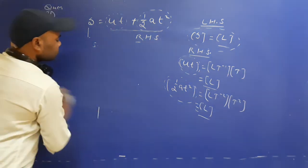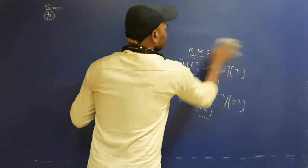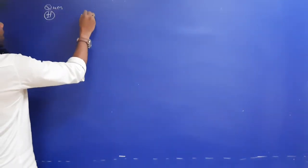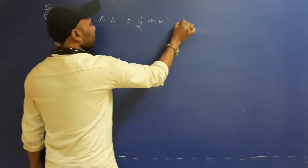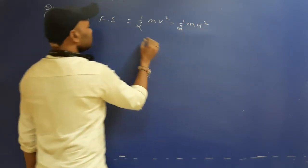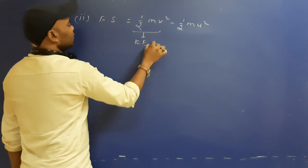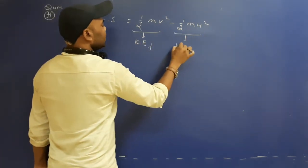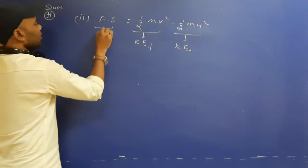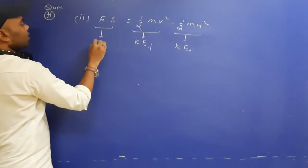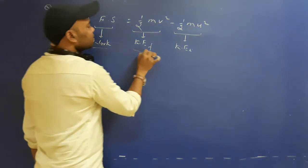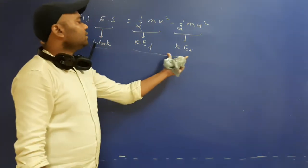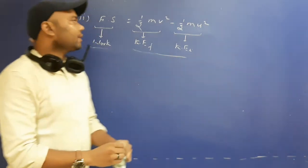Now we move to the second problem. F into S equals the change in kinetic energy. The second equation is: F into S equals half mv squared minus half mu squared. This is the final kinetic energy and this is the initial kinetic energy. F into S represents force into displacement, which is work. So, work equals the change in kinetic energy — that is, the difference of final and initial kinetic energy.